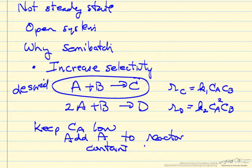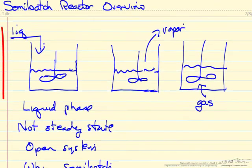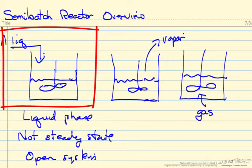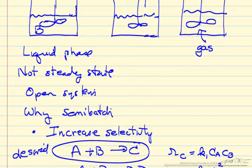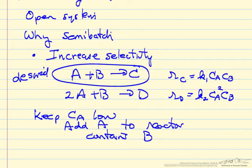And so what that means to keep the concentration of A low is that we add A to a reactor that contains B. So this would be the case. We have the system here. We're adding A, and we start out with B in the reactor. So A is reacting. A concentration stays low. We preferentially make the product C.